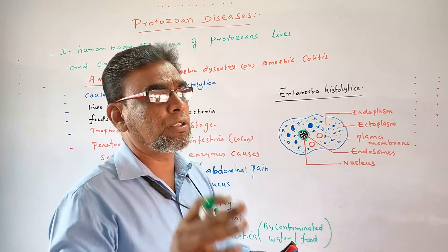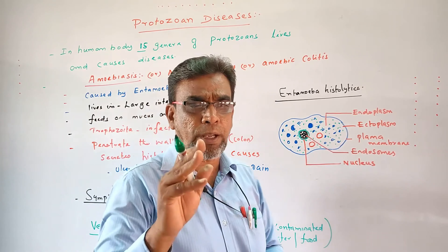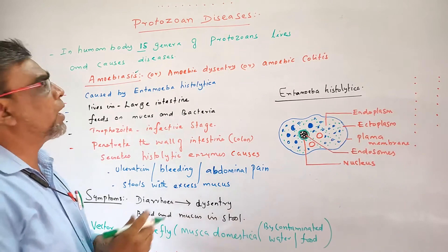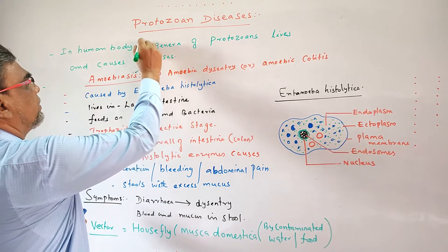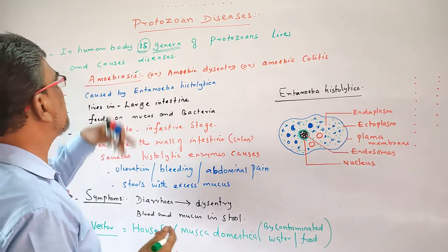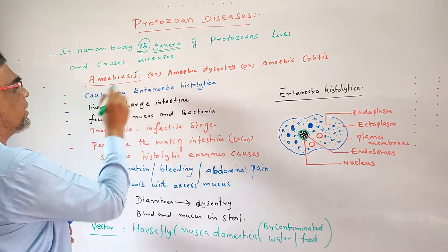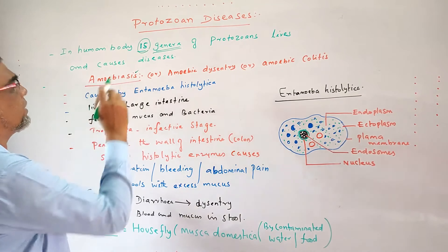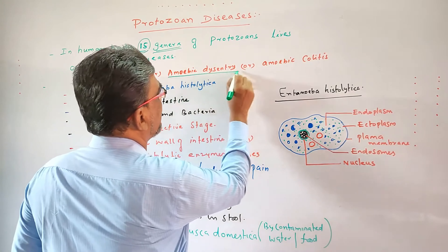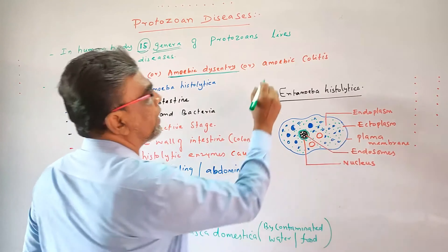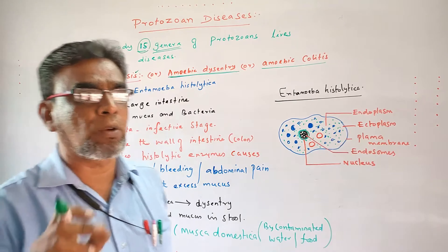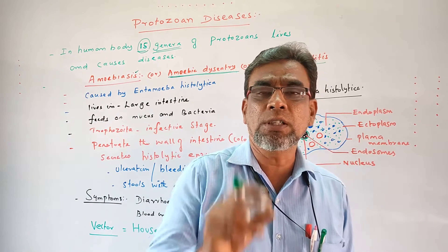Out of these, one more important disease caused by protozoa is called amebiosis. It is called amebiosis. More than 15 types of genera and species live in our body. The most important disease is amebiosis, which is otherwise called amebic dysentery or amebic colitis. These are the other names.